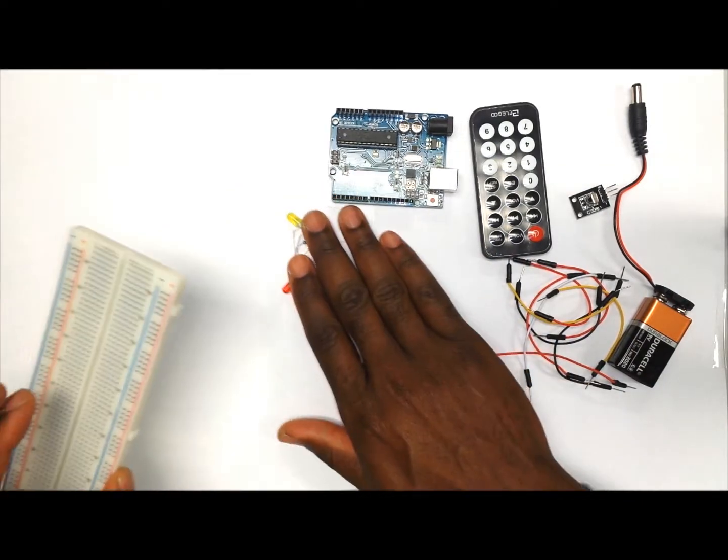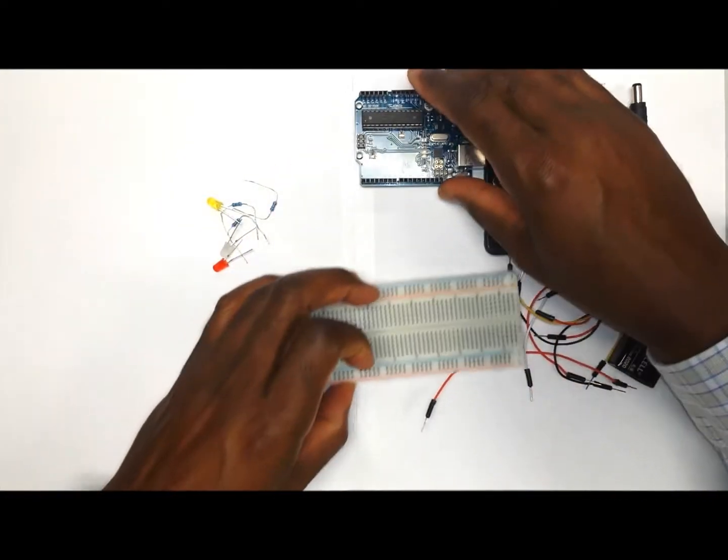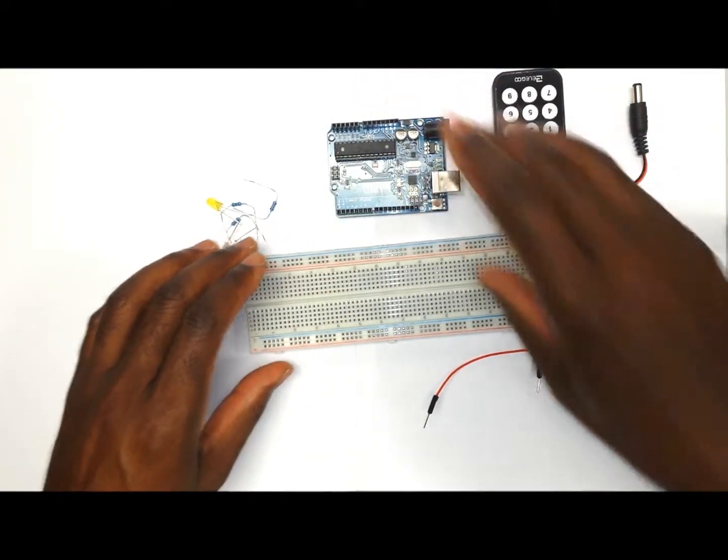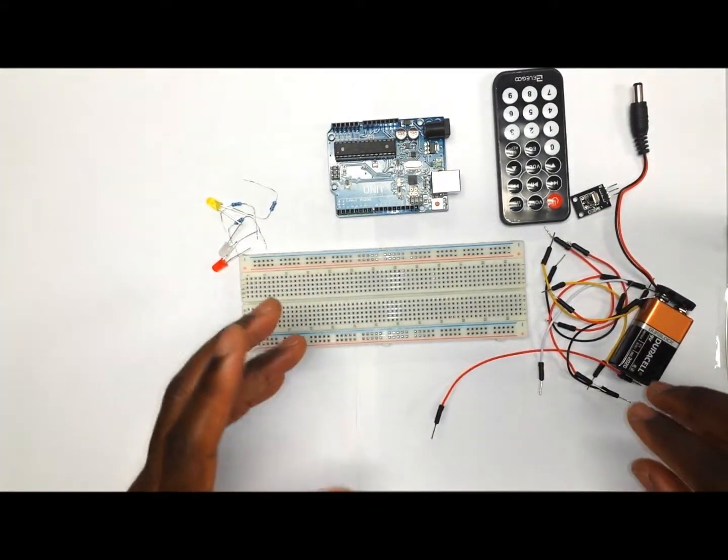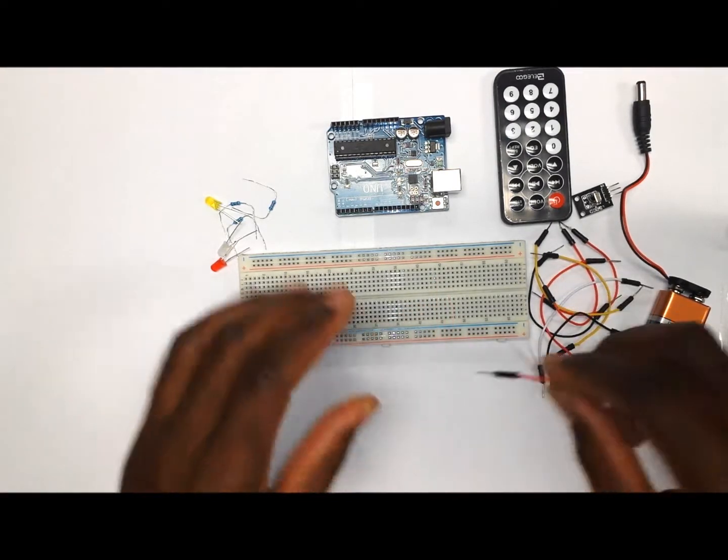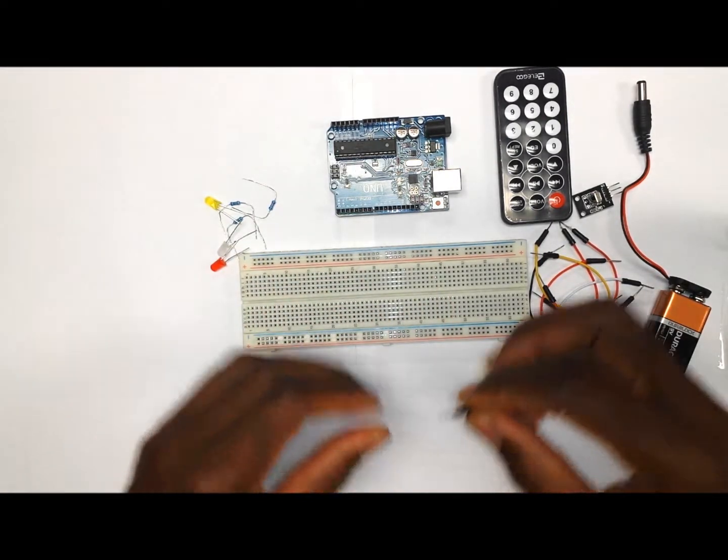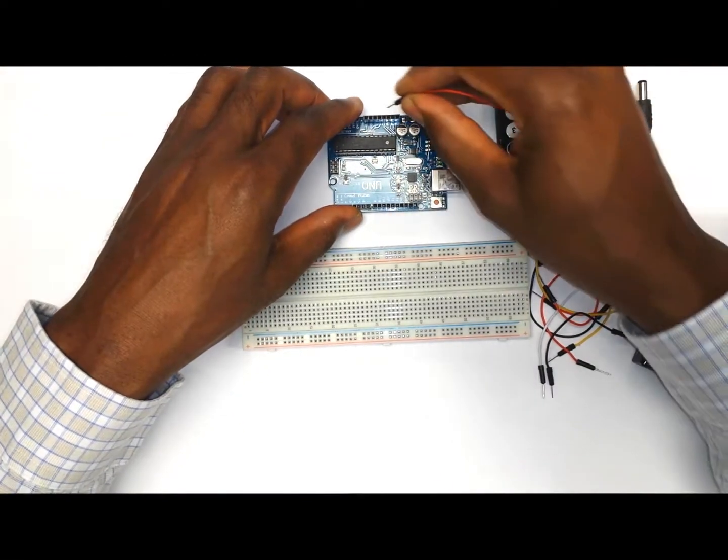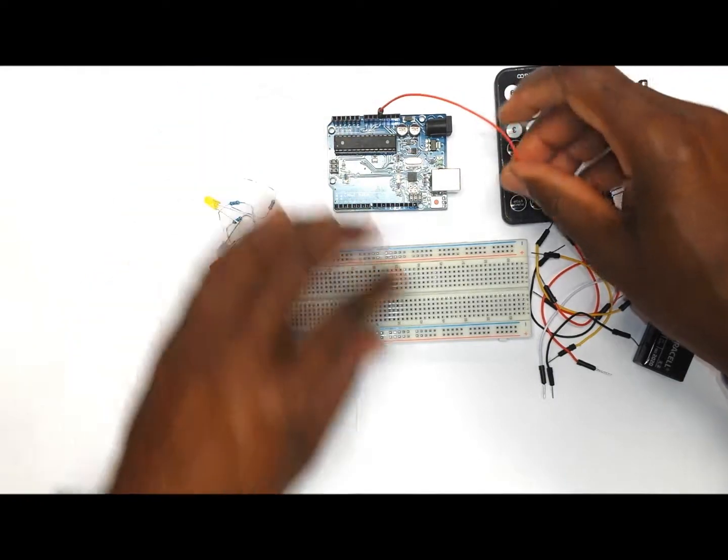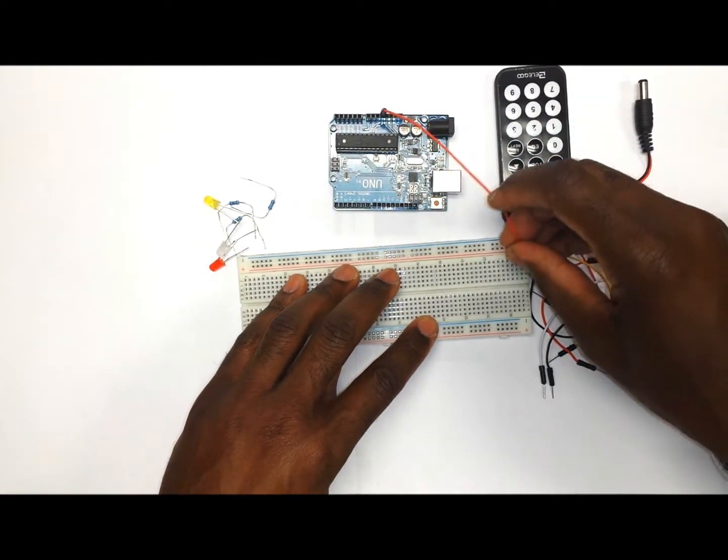What we want to do first is make sure that we connect the Arduino to the breadboard. First of all, we'll put on the wires that are going to provide the power source to the breadboard. So we are going to connect our first wire from the 5 volt pin on the Arduino to the positive rail of the breadboard.